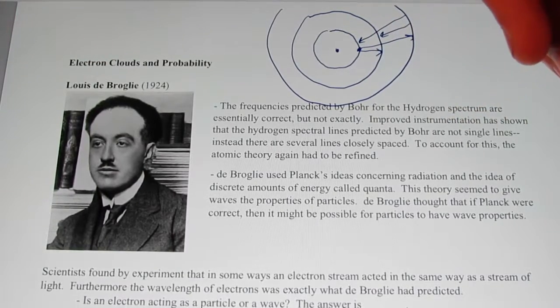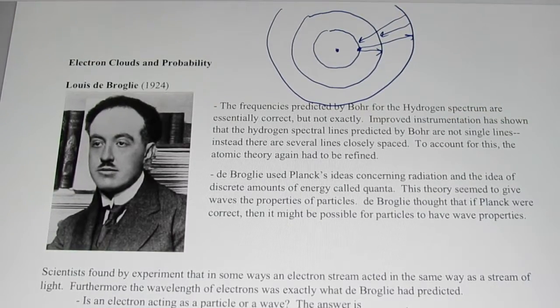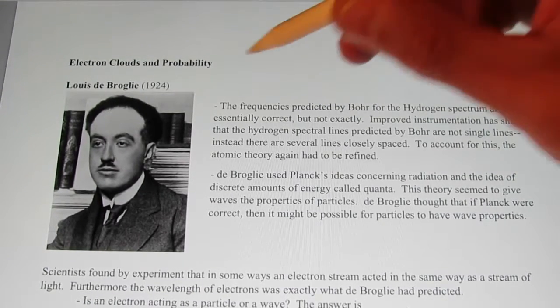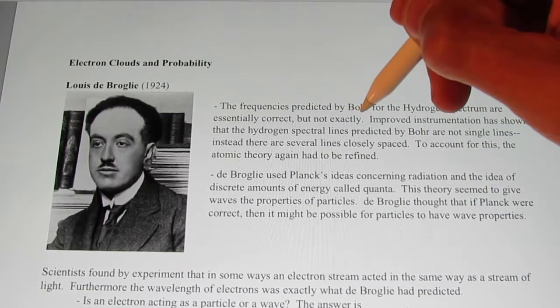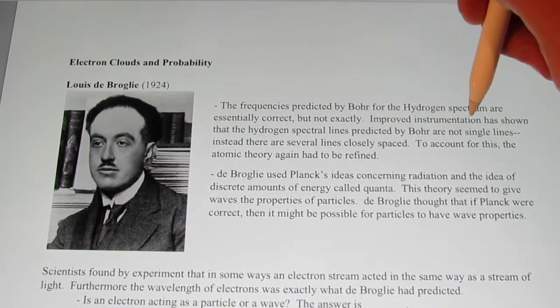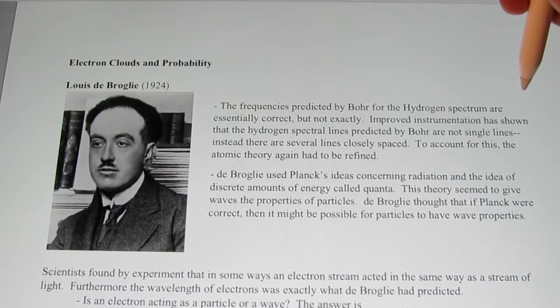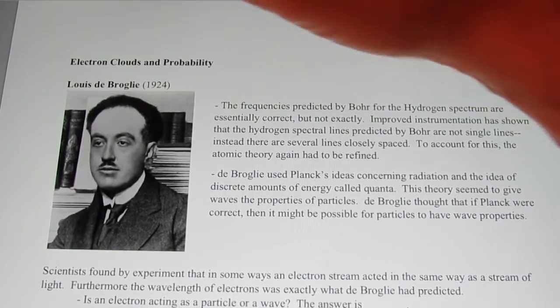Bohr treated the electron like a particle. Now, the frequencies predicted by Bohr for the hydrogen spectrum are essentially correct, but not exactly. Improved instrumentation has shown that the hydrogen spectral lines predicted by Bohr are not single lines. Remember the hydrogen spectrum, kiddos?